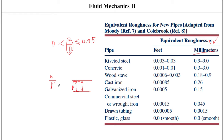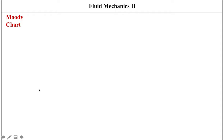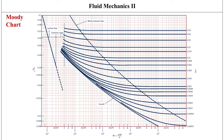Since friction factor is a function of Reynolds number and relative roughness, we need a way to relate all three terms. One approach is the Moody chart, which provides a graphical representation of the relationship between friction factor, Reynolds number, and relative roughness factor.